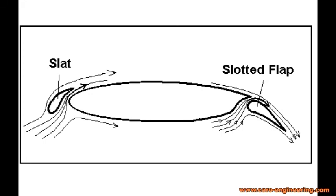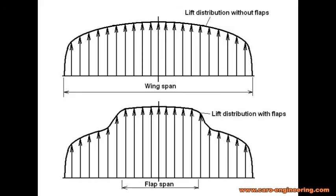I said earlier that the flaps will not be full span, so what does that mean for lift? The sketch shows the lift distribution of a wing with flaps up, and underneath is a lift distribution with flaps extended. The lift is locally increased only where the flaps are. The transition of the lift at the end of the flaps is not abrupt, but the pressure bleeds off through vortices, as it does at the wing tips. Calculating the lift distribution accurately is not simple — this is done with specialized programs. Therefore, we can just start the design by estimating the lift the flaps will add, based on the airfoil lift coefficient at various stations along the span.